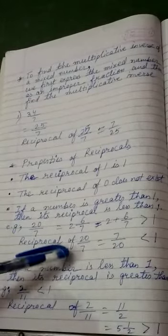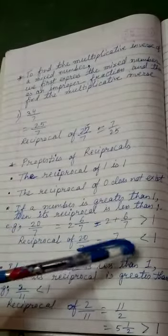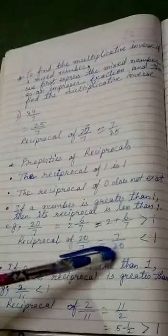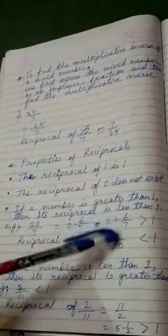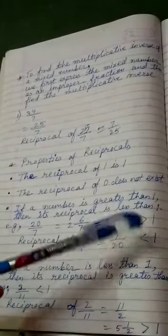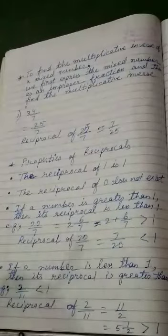So, reciprocal of 20 by 7 is 7 by 20. That is, if we divide an object into 20 parts and that 7th part, that is not equals to 1, neither it is greater than 1, it is less than 1.